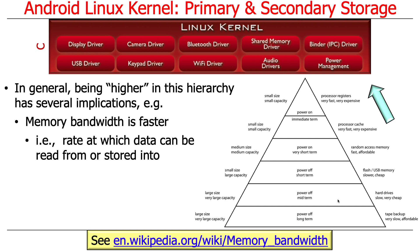At the bottom, you have things like tape backup — nobody puts tape drives on smartphones, really on almost anything these days except disaster recovery or compliance storage. Stuff at the bottom is very cheap, huge capacity, but slow to access. The next layer up would be things like hard drives, which are slower but very cheap and can store lots of data. So it's basically organized like this.